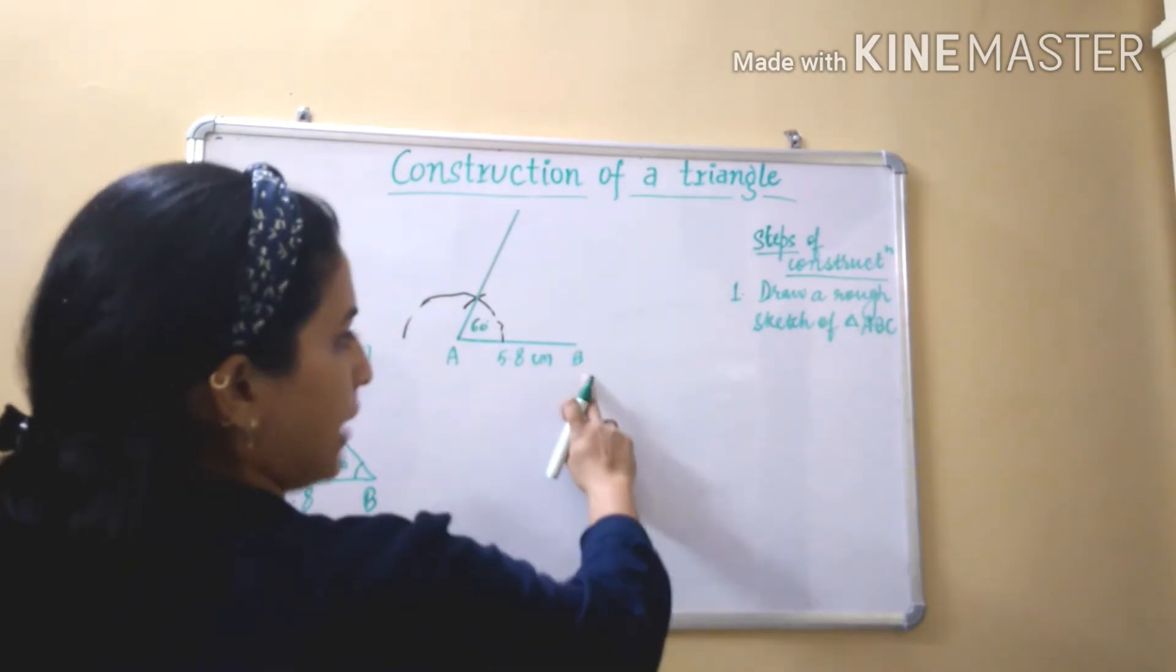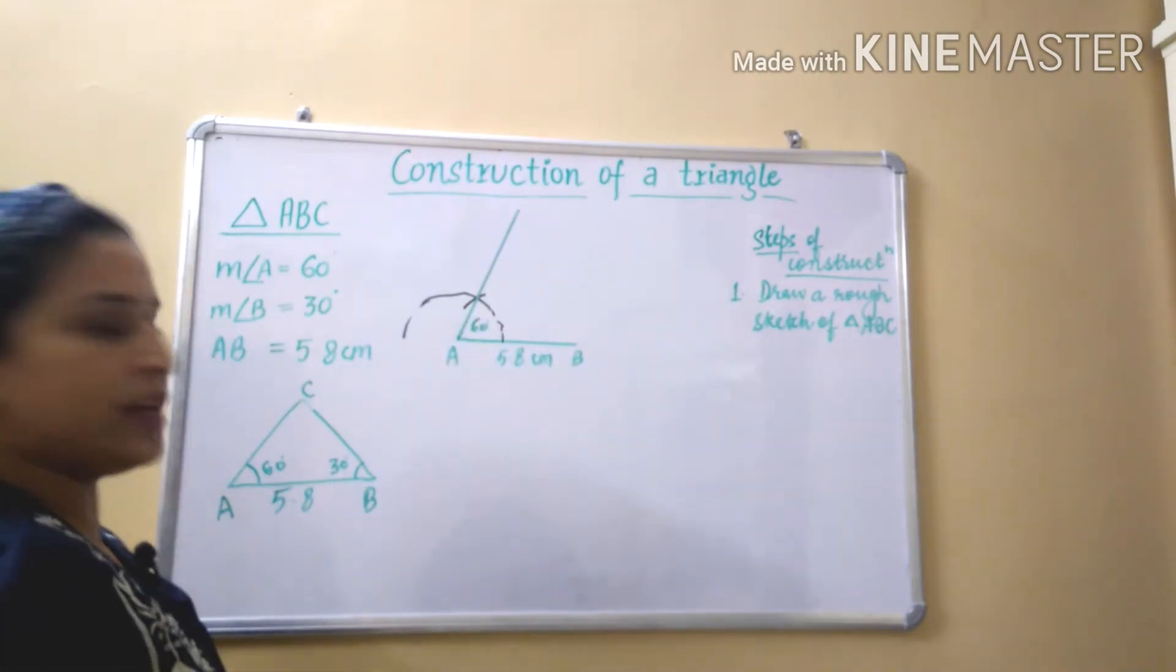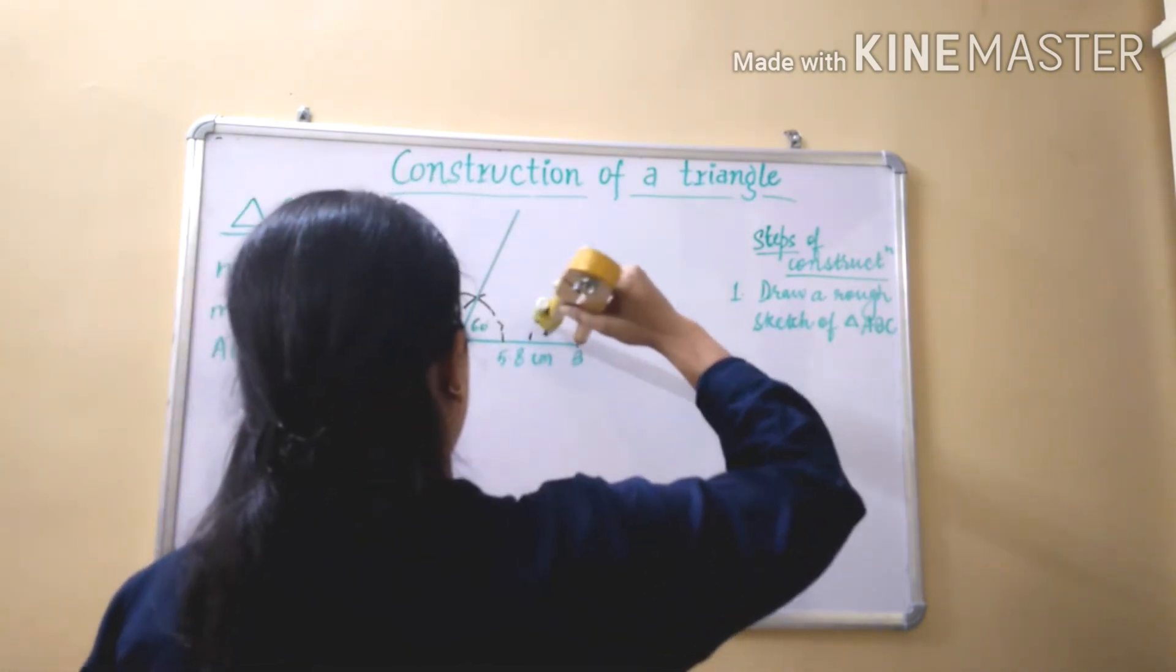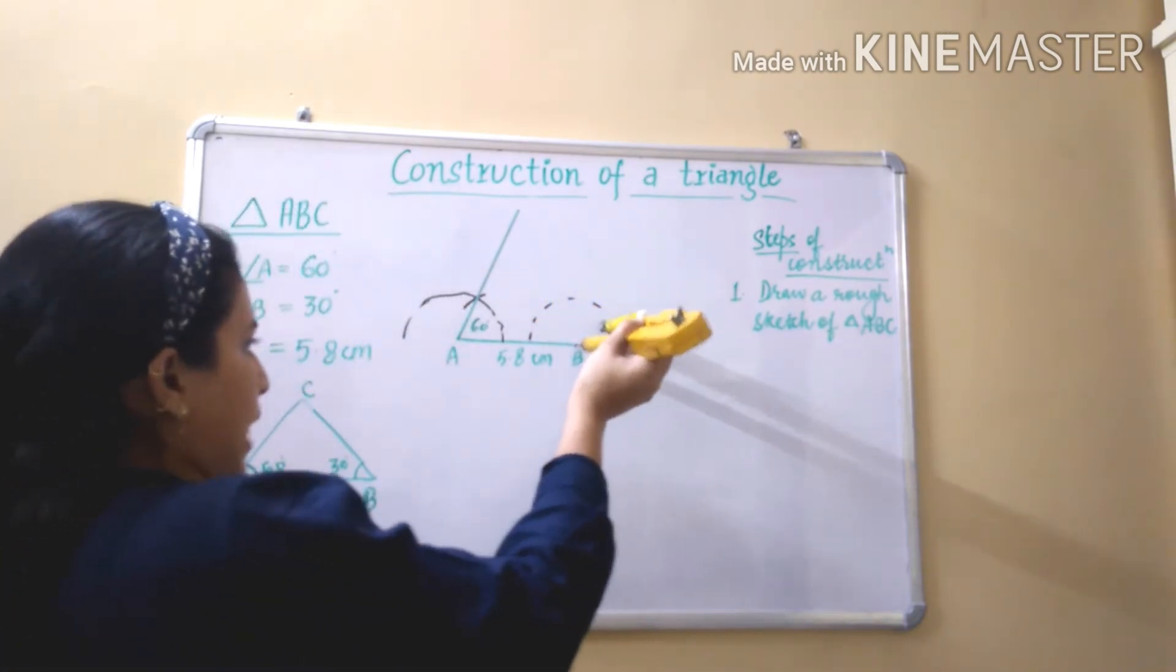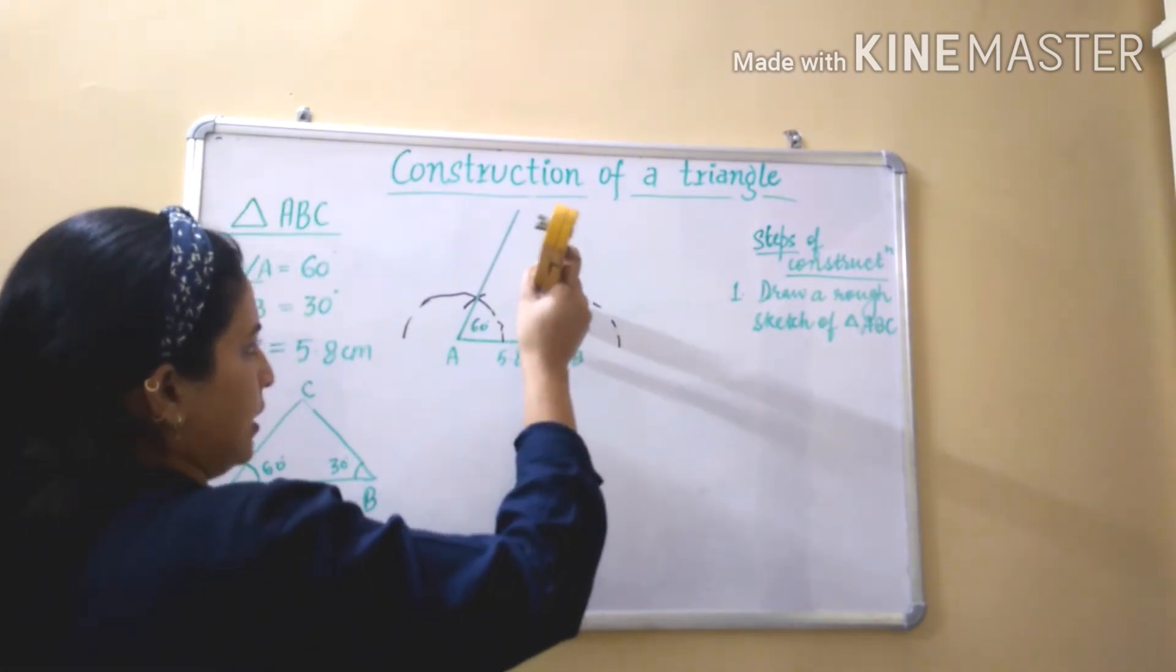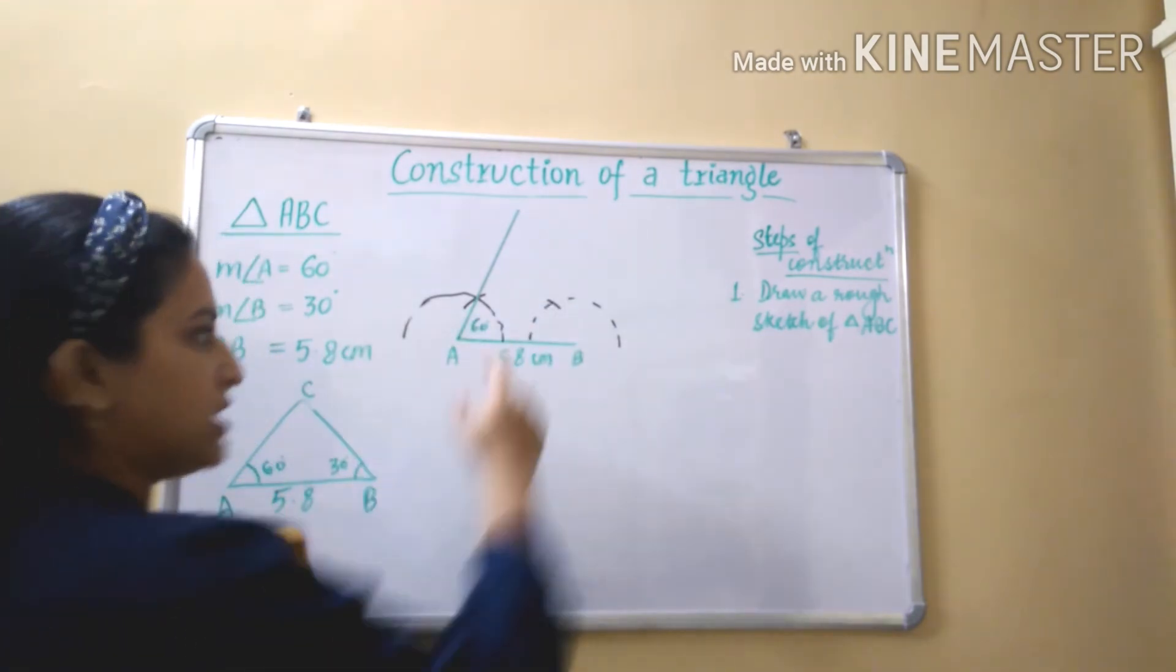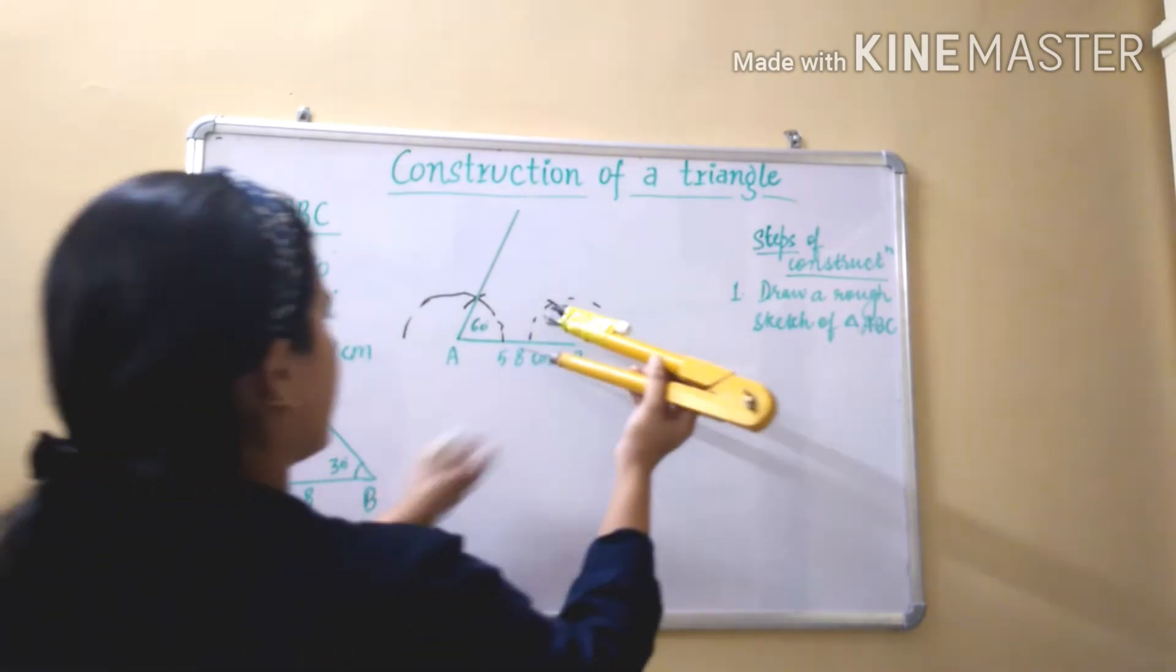Now we will draw angle B that is 30 degrees. And we know half of 60 it will be 30. So yes, first of all we will give the first arc. I am creating the dotted line as you can see. So yes, our first arc is this.